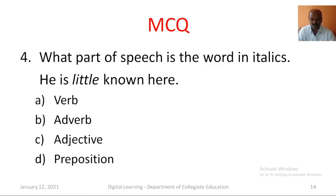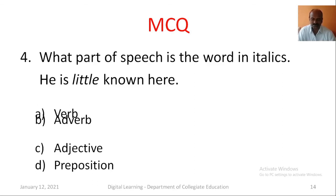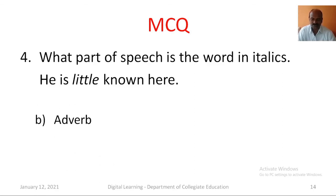Question number 4. What part of speech is the word in italics? Little is known here. Option A: Verb. Option B: Adverb. Option C: Adjective. Option D: Preposition. The correct answer is option B, Adverb.